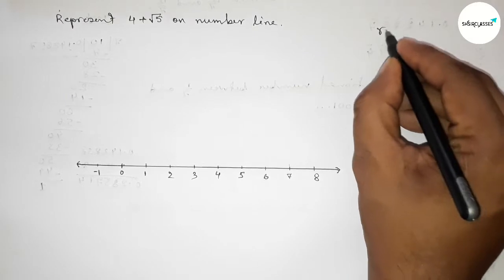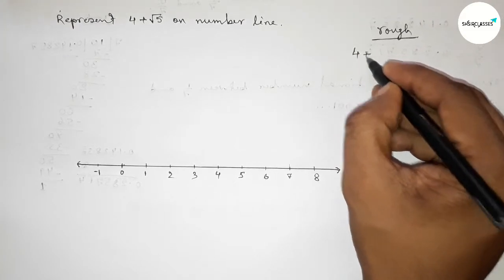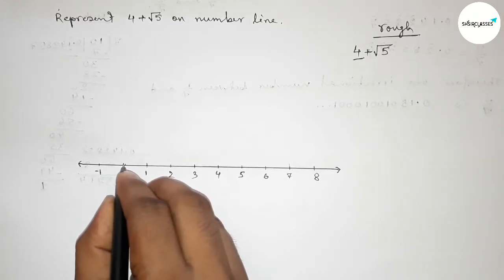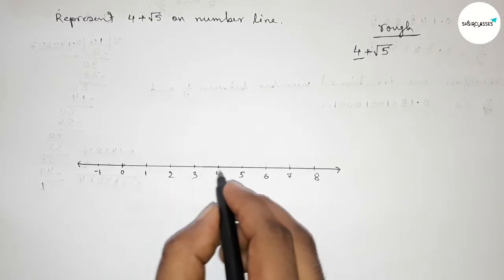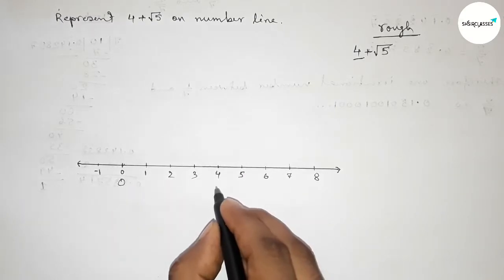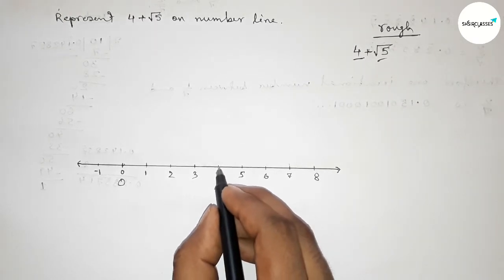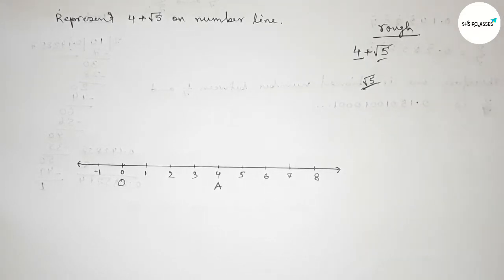Now roughly discussing some important calculation. So we have to represent 4 + √5 on number line. Now first four units, so from zero to four this is four unit length. So taking point here O and here A. Now we have to represent √5 from four to this side. So now discussing about √5.